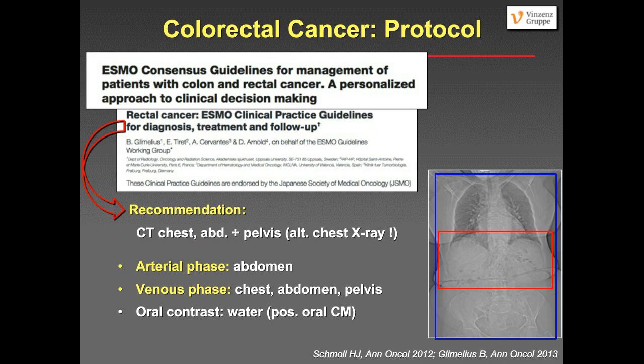The last tumor entity I would like to discuss is colorectal cancer. Be aware that colon cancer and rectal cancer are biologically really different tumor entities. The European Society of Medical Oncology recommends CT of the chest, abdomen, and pelvis — although they say a chest X-ray is alternatively acceptable, we always do CT of chest and abdomen. We perform an arterial phase of the upper abdomen and a venous phase scan of chest, abdomen, and pelvis, and again we use oral contrast — usually water, or sometimes a positive oral contrast.